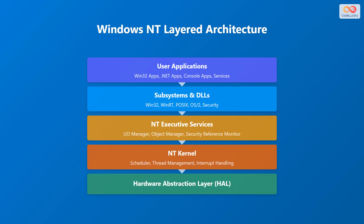The Windows NT architecture is organized into several distinct layers, each with specific responsibilities. At the top, we have the user applications including Win32 apps, .NET apps, console apps, and various services. Moving down, the next layer consists of subsystems and dynamic link libraries, or DLLs, such as Win32, WinRealTime, Portable Operating System Interface, OS2, and Security Components.